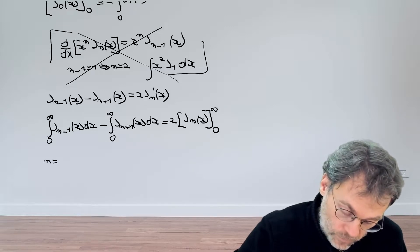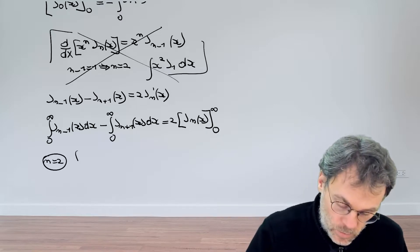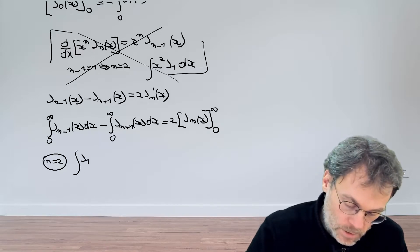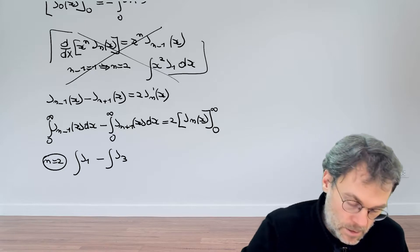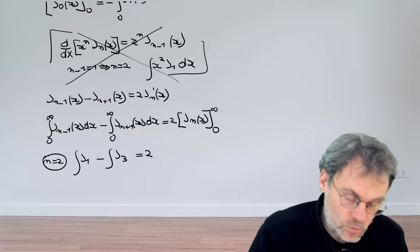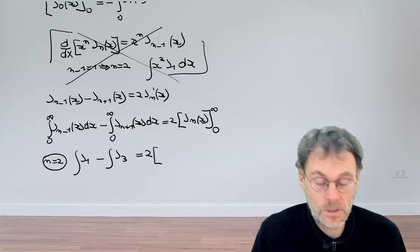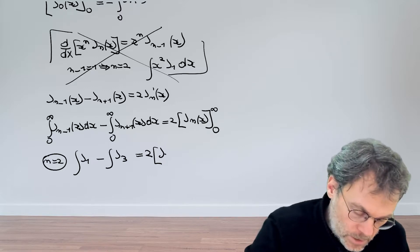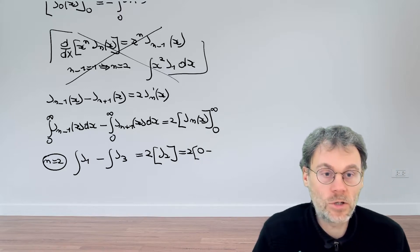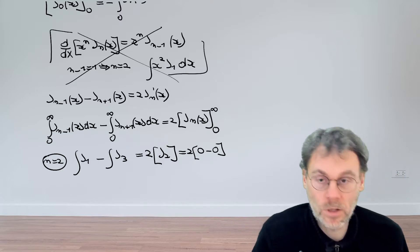Let's evaluate that formula for n = 2. In that case we get the integral of J₁ minus the integral of J₃, equal on the right-hand side to 2 times: at the upper bound at infinity the Bessel function vanishes, and J₂ at the origin also gives 0. So the right-hand side is 0.